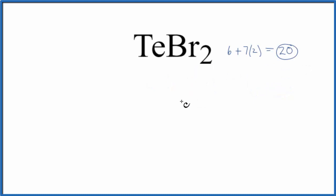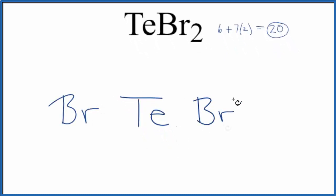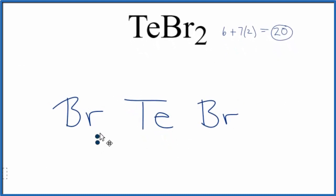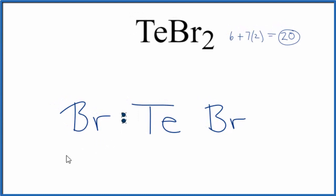So we'll put the least electronegative element in the center. That's the Te. And then let's just put the bromines on either side. So we have 20 total valence electrons. We'll put electrons between atoms. That forms the chemical bond, the covalent bond. These are shared. And then we'll complete the octets around the bromines, the outer elements.